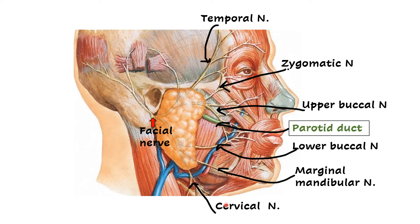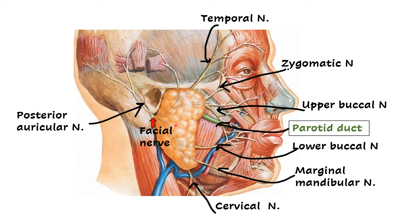So these are the five terminal branches: temporal, zygomatic, buccal, marginal mandibular, and cervical. All these nerves supply the muscles of facial expression. Besides these, there is another branch given from the facial nerve before it enters the parotid gland — this emerges along the posterior border of the parotid gland and is the posterior auricular nerve.